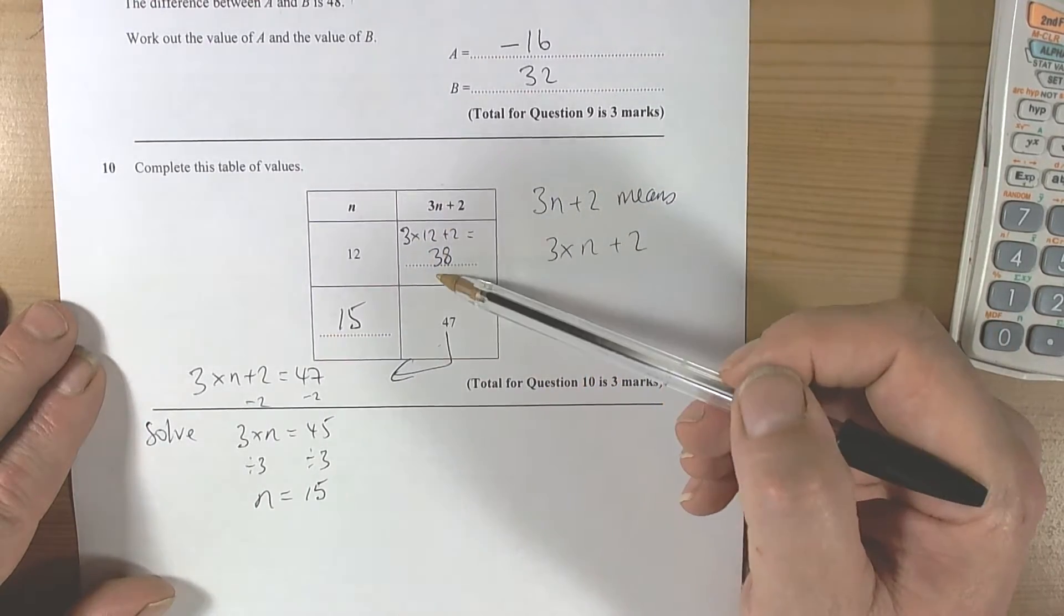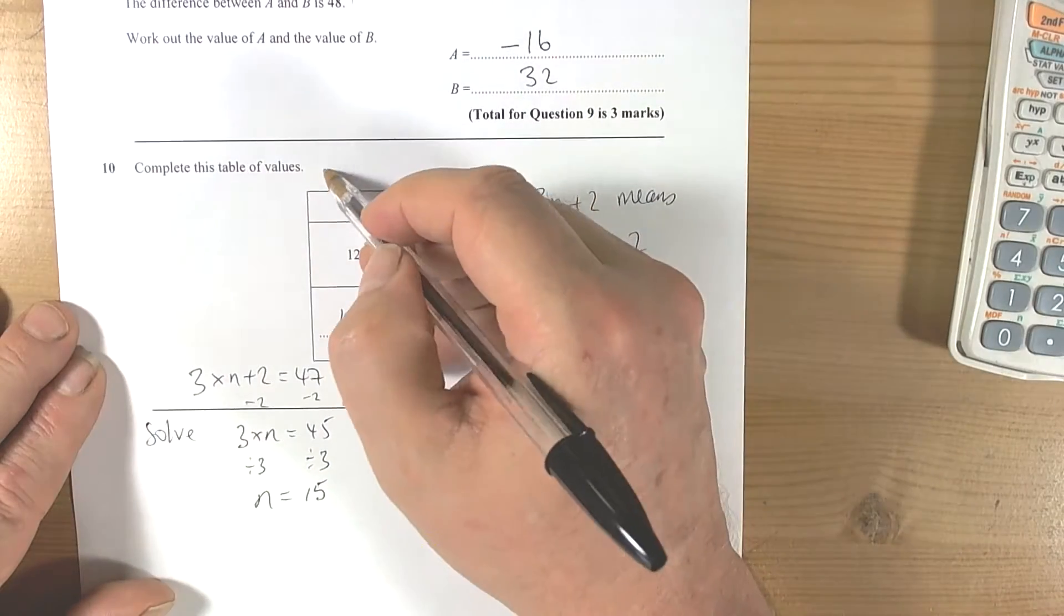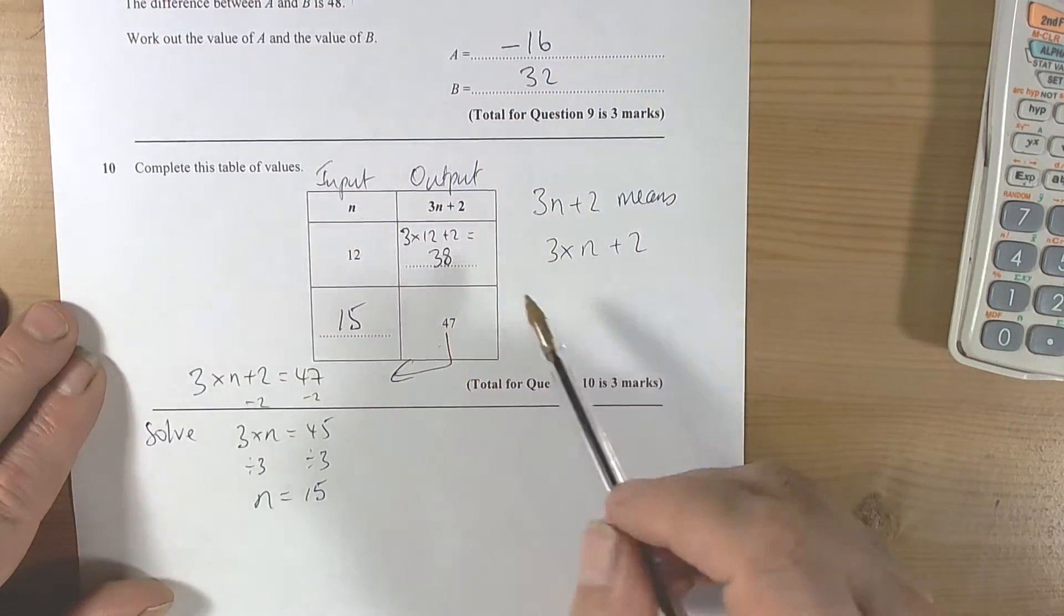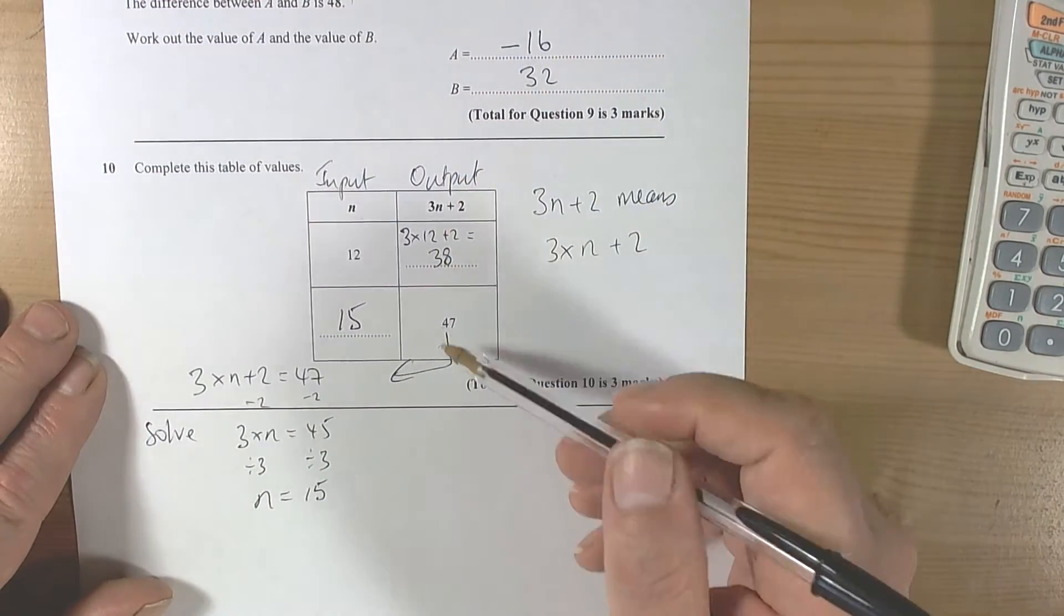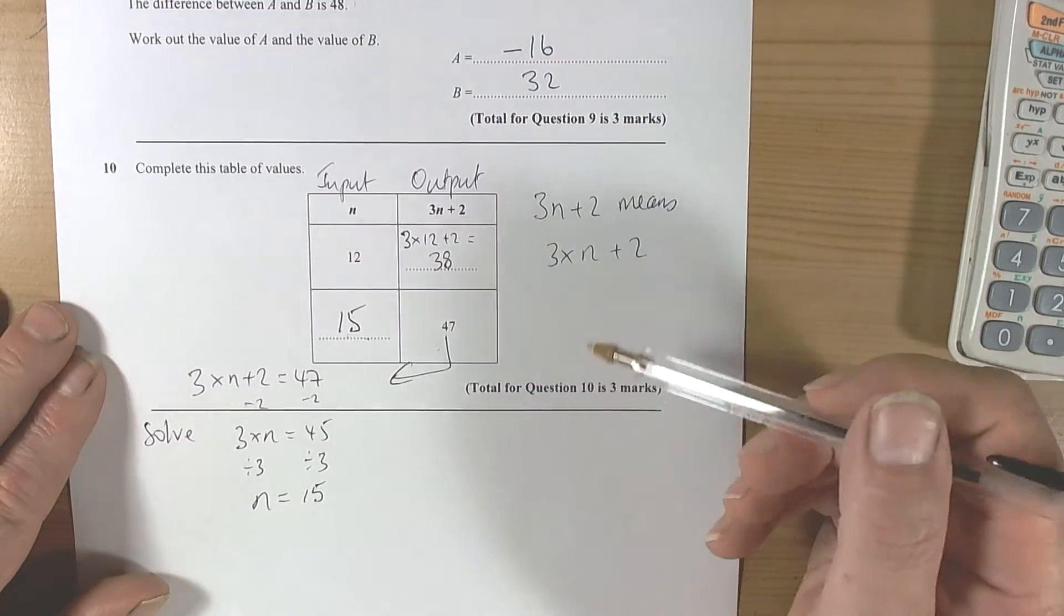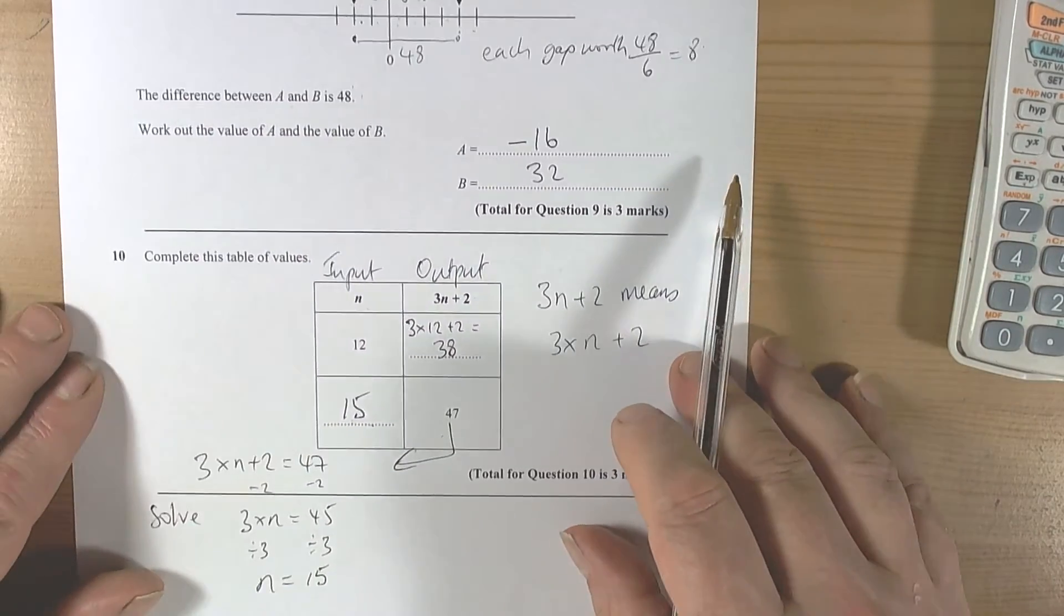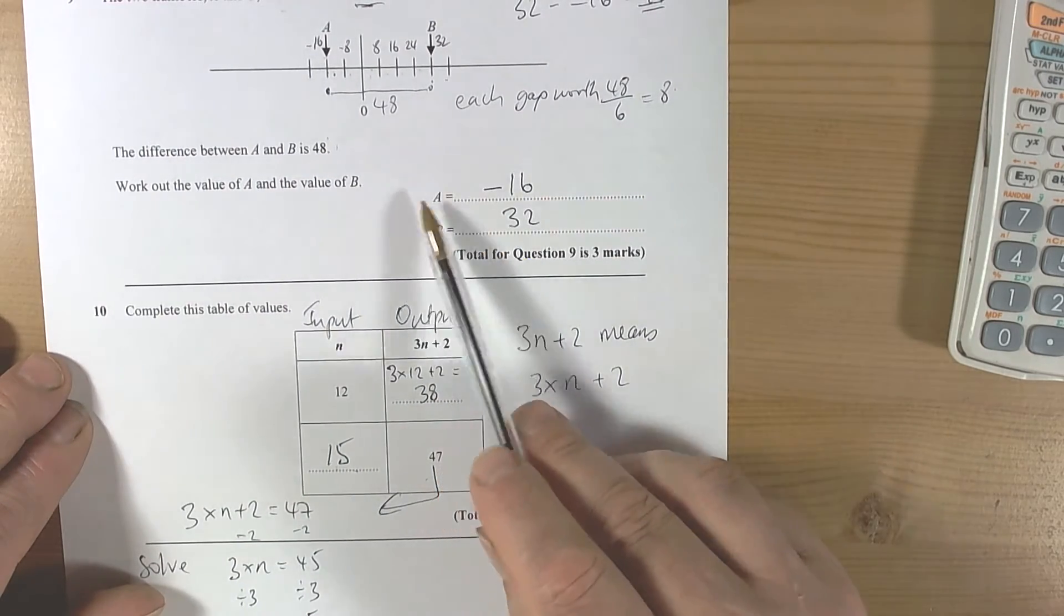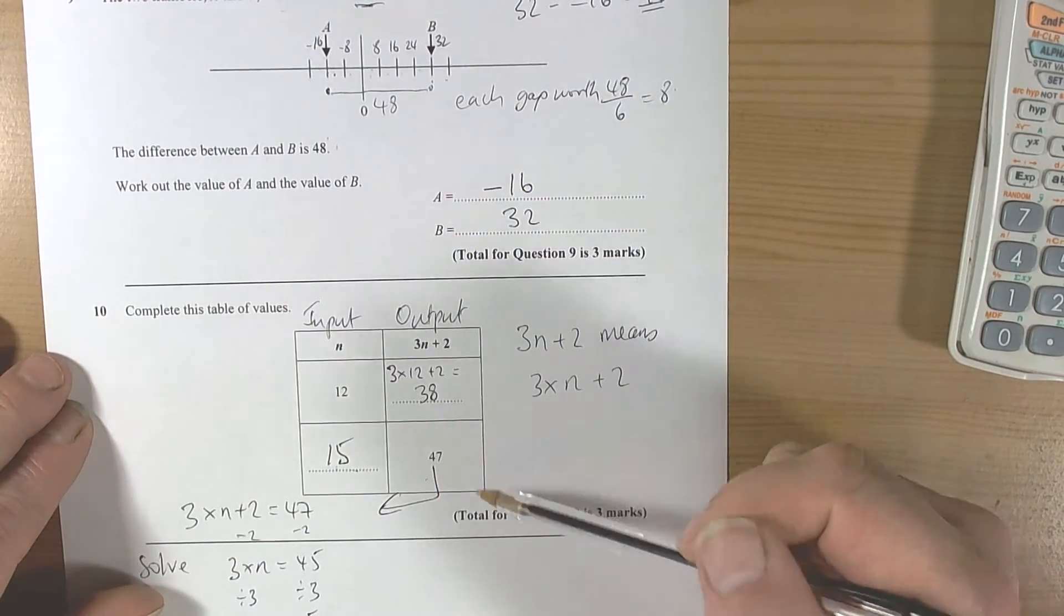They're telling us that to change whatever this number is, you do three times it plus 2 to give you this. In a way, this is basically going back to the input output, so we're going to think in those terms. And if we're going backwards, we do the opposite operations: take away 2, divided by 3, and so forth. A few ideas about using scale and working through how to get the different answers.